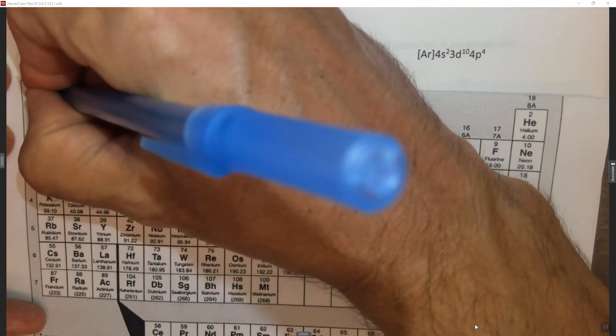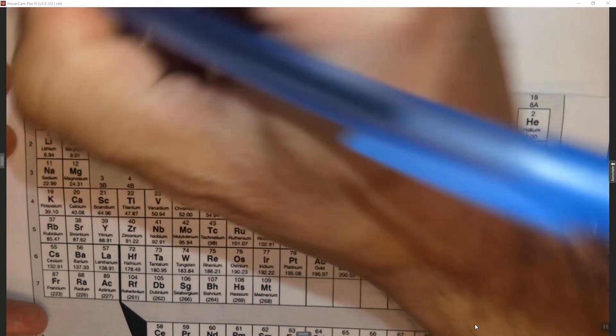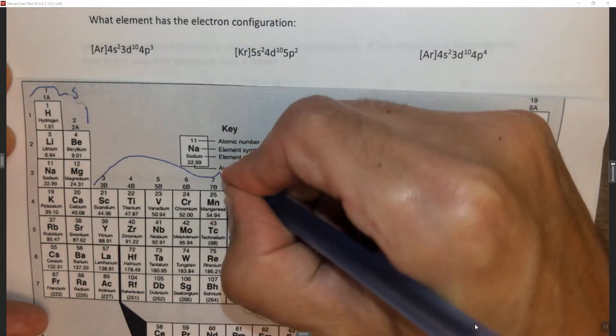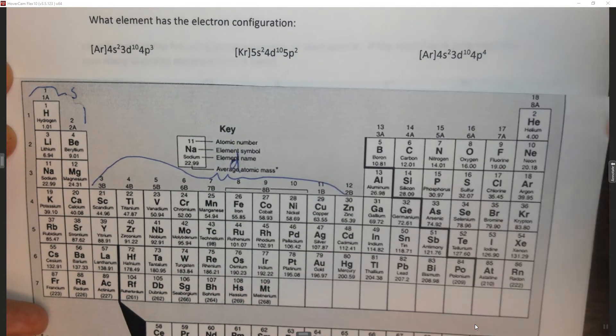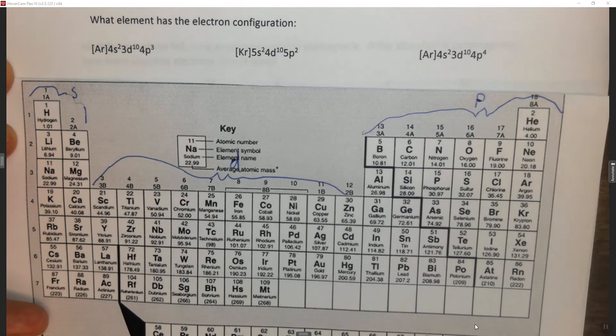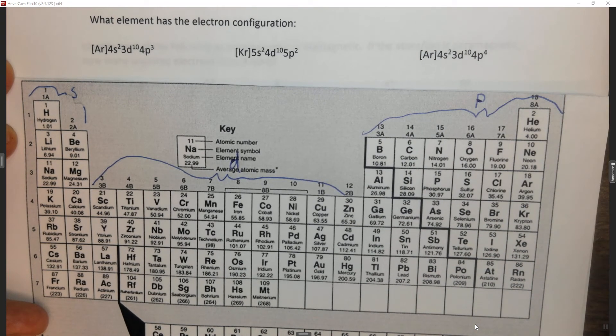So just as a brief review, this is the S block, this is the D block, and this is the P block. Okay, so that's basically that.